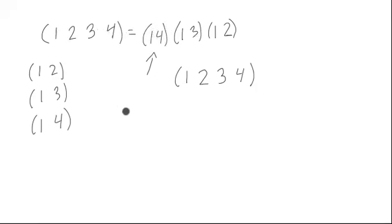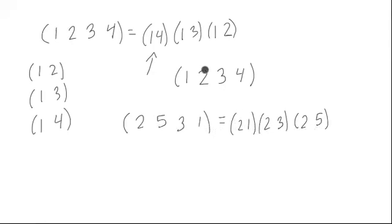So for instance, what if I had something like (2 5 3 1) as a cycle? How do I write this as a product or composition of two cycles? Start with my first element, 2. In fact, honestly, you could start anywhere here. I'll show you that in a minute, but let's start with 2 first the way it's written: (2 5), the next one is (2 3), next one is (2 1). And you can double check this. There's equality here, the same way as there was here.